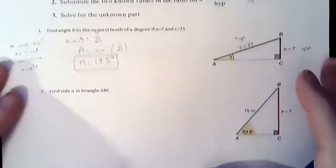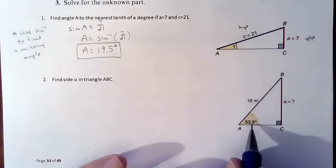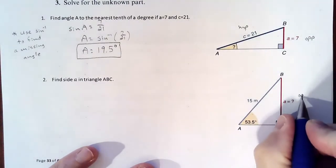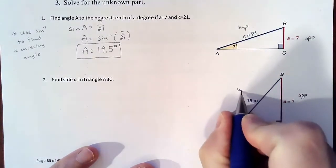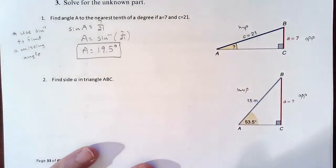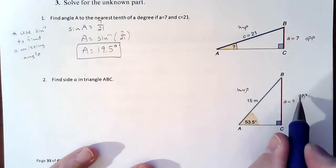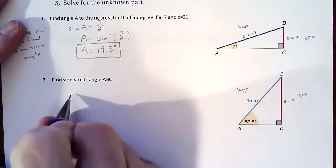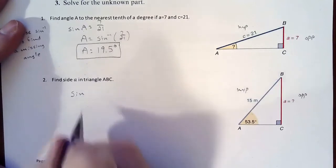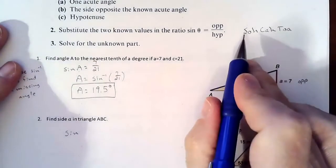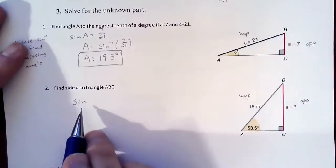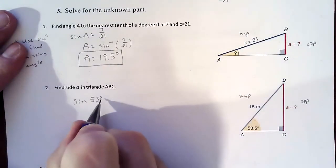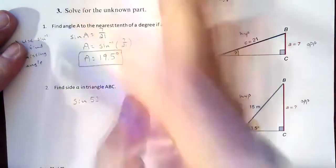So next one, we have the angle but we're looking for the side opposite. And the other piece of information that we know is the hypotenuse. So since we know the angle, we're looking for the side opposite, we know the hypotenuse, that's telling us we are setting up our sine. So sine of 53.5 degrees